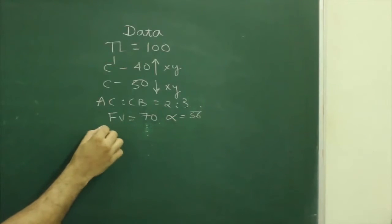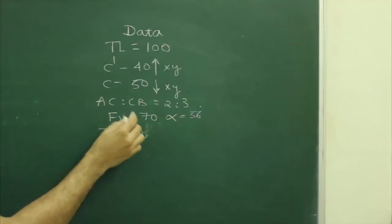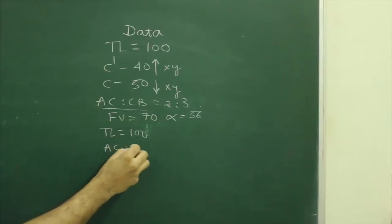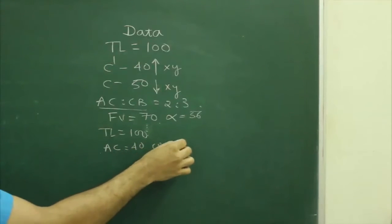Now if you see, true length is 100, so if you divide in this ratio then A to C would be 40 and C to B would be 60.